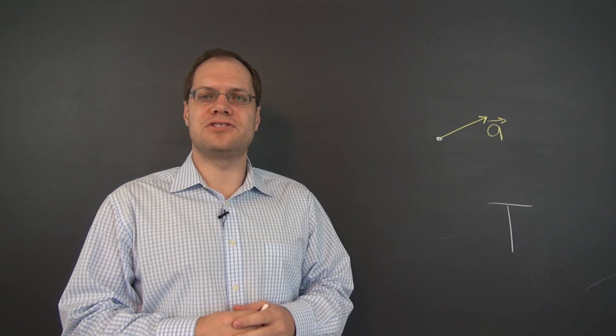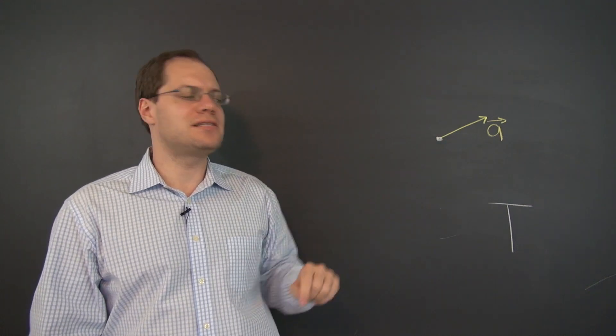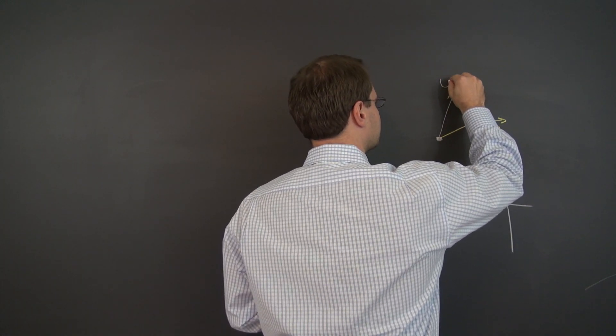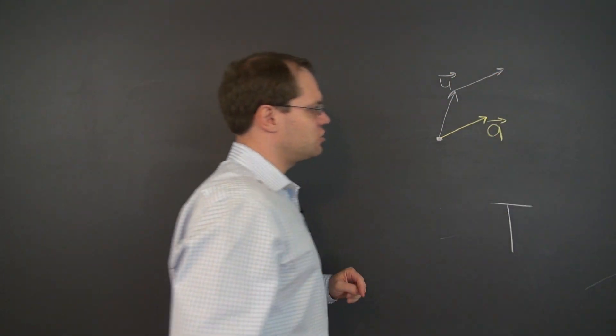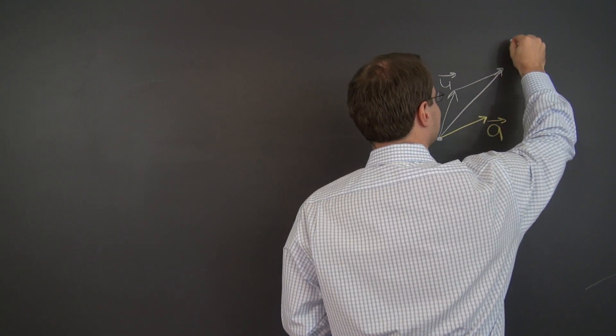Our last geometric example of a transformation is translation by vector a. Here is the definition. Given any vector u, the result of this transformation is to add the vector a to the vector u. And then this is tu.